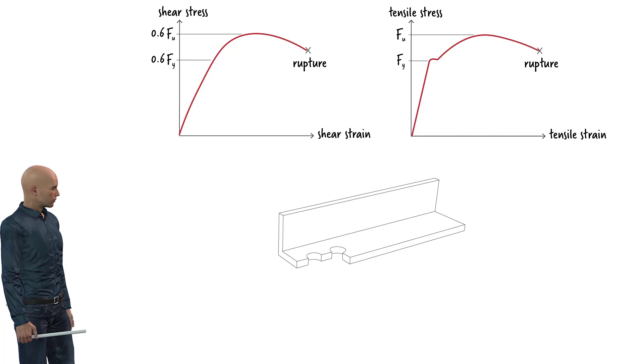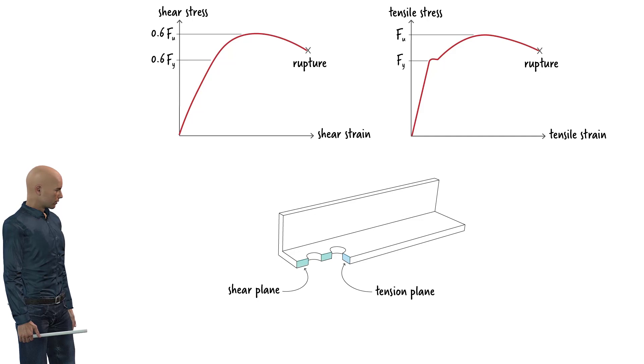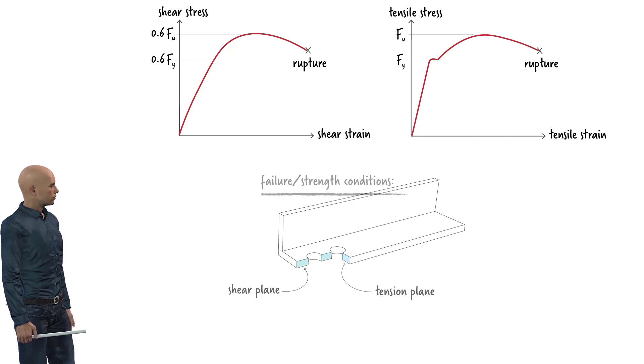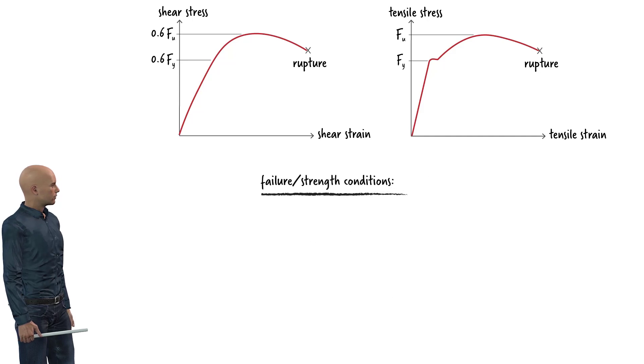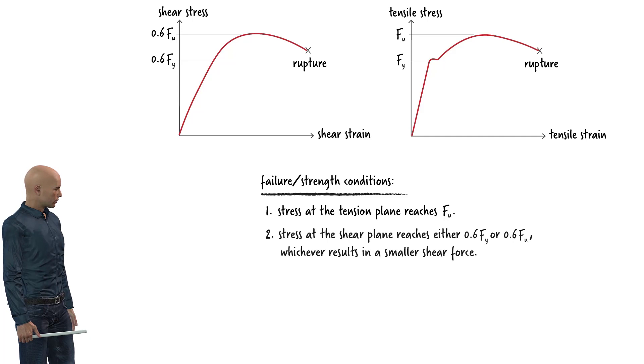It is important to note that block shear failure occurs simultaneously along the tension and shear planes. Therefore, we can hypothesize that for design purposes, the tearing of the material occurs when two conditions are met: 1. Tensile stress along the tension plane reaches the material's tensile strength. 2. Shear stress along the shear plane is either at the yield point or has reached the material's shear strength.